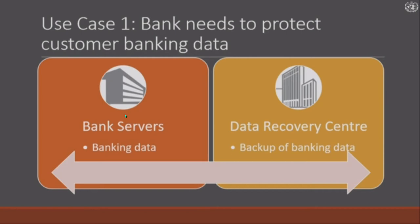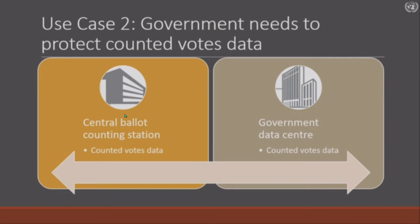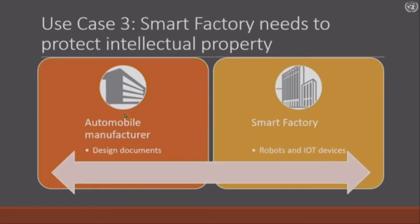So what were the problems faced if all current encryption could be broken? Use case one: a Swiss bank needed to protect customer banking data being transferred to their data recovery center — that transfer is where cyber criminals could strike. Use case two: a government — Geneva, in fact — wanted to protect counted votes data. From the central ballot counting station, counted votes need to be sent to the government data center, and we need to ensure the integrity of that data so you don't get the wrong vote numbers.